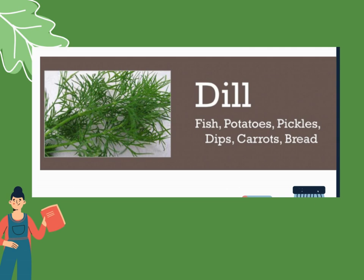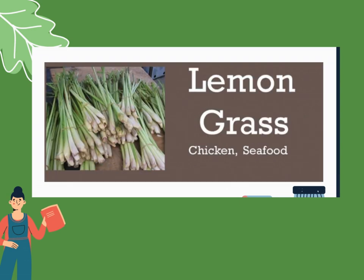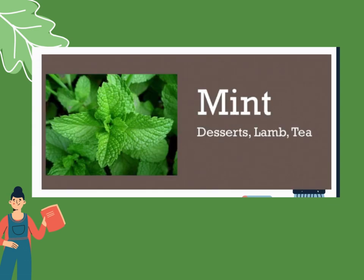Next, dill. Used for fish, potatoes, pickles, carrots, and bread. Next, lemongrass or tanglad. You can use this for chicken — if you want to marinate chicken, you can add lemongrass — and also for seafoods. Next, mint. Mint is used for desserts, lamb, and tea.